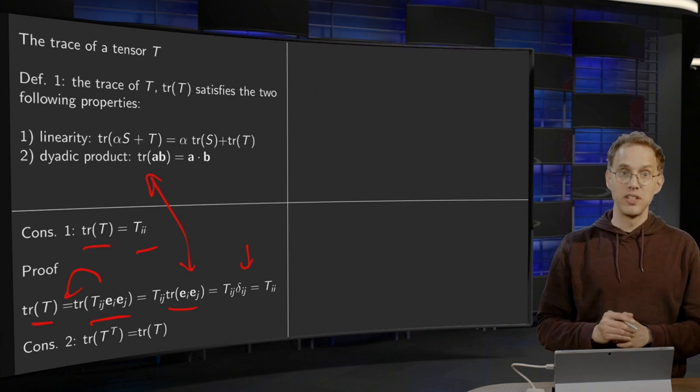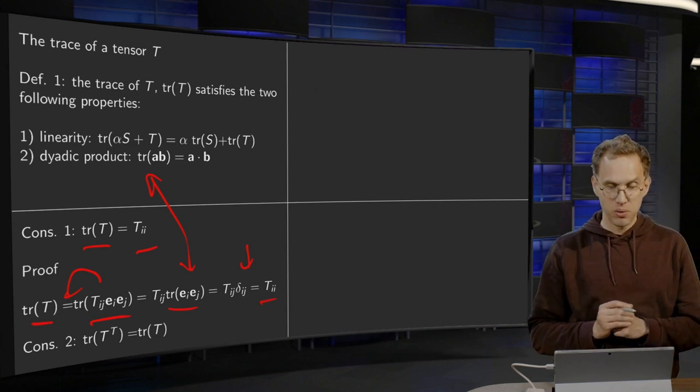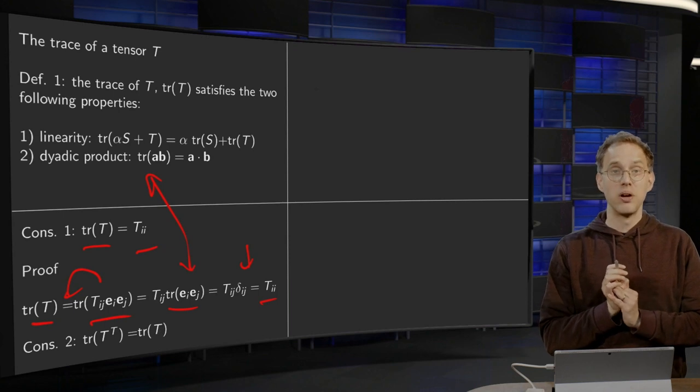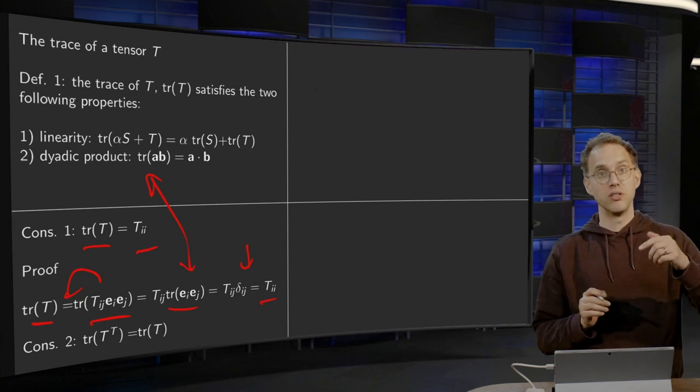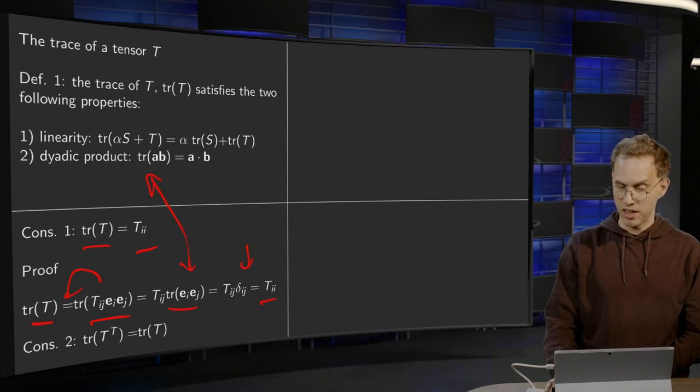And then we can perform the sum Tij summed over j, for example. It gives us Tii. So there we are. Indeed, the trace of a tensor yields the sum of the elements of its matrix representation on the diagonal.